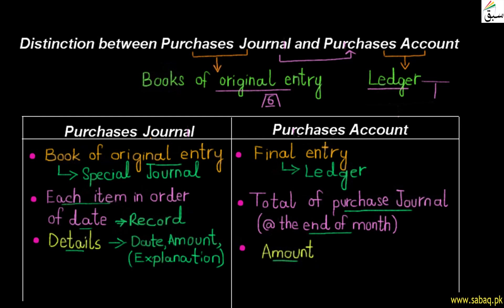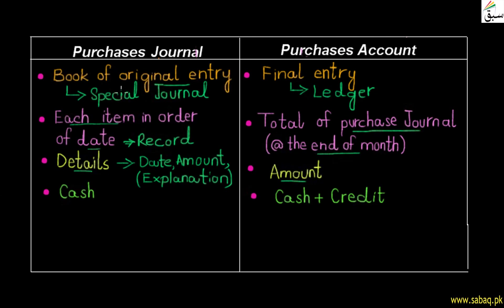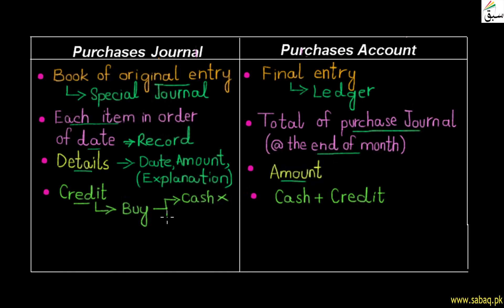A very important difference: the purchases journal records only credit purchases. There are two ways to make a purchase — cash purchases, where payment is made immediately, and credit purchases, where payment is deferred for a future time period such as 1, 2, or 3 months. Cash purchases are not recorded in the purchases journal. Only credit purchases are recorded in the purchases journal.